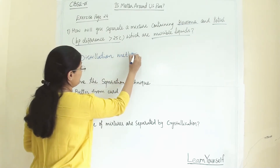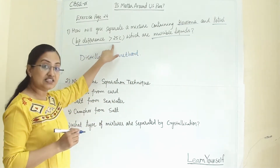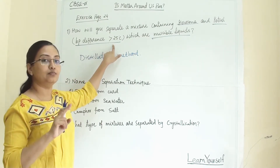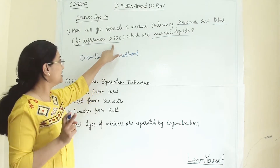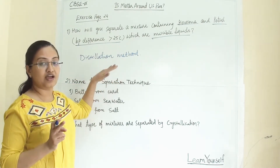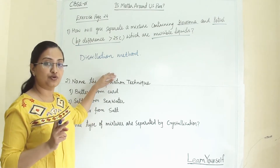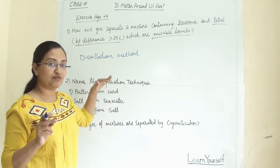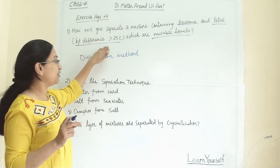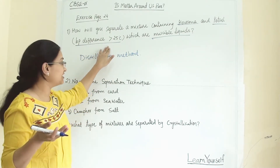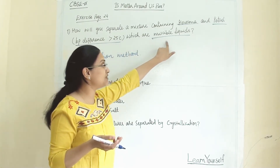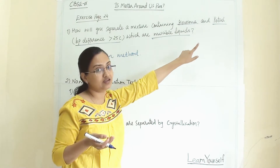If the boiling point difference is less than 25 degrees Celsius — as we have seen in the case of benzene and toluene — then we use the fractional distillation method. I have given the link to that video in the description. So here, because the boiling point difference is more than 25 degrees Celsius, we use the distillation method to separate kerosene and petrol.